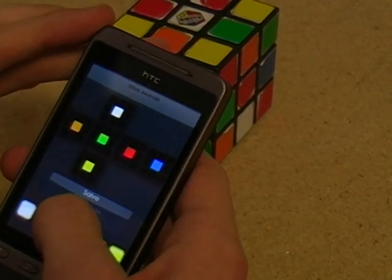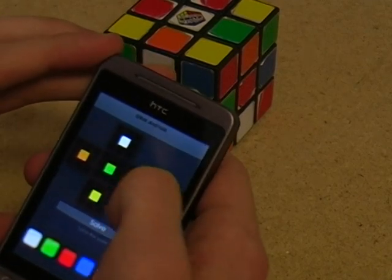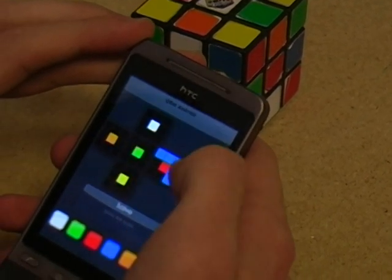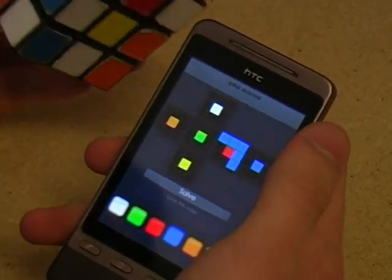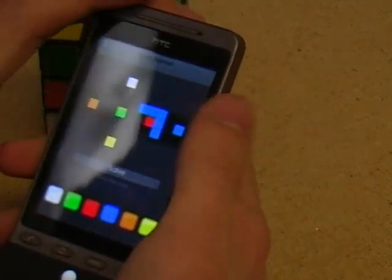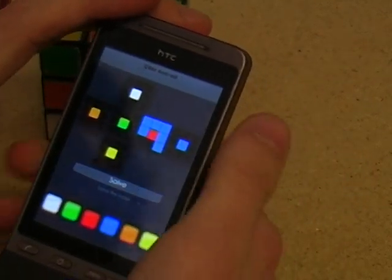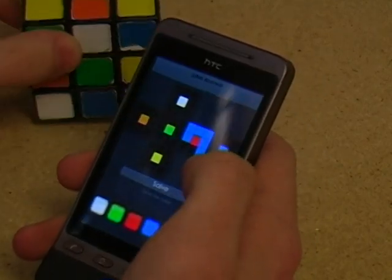You can pick out your color here and put it out in the right place. So basically you put out the colors of your own cube to then solve it in the phone. And you'll get an algorithm that you will follow to get a solved cube pretty easily.